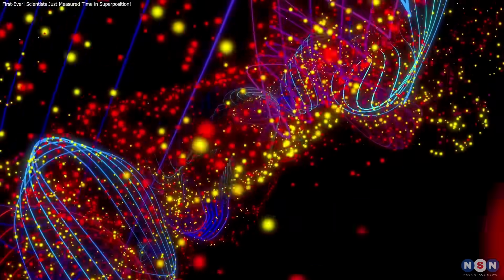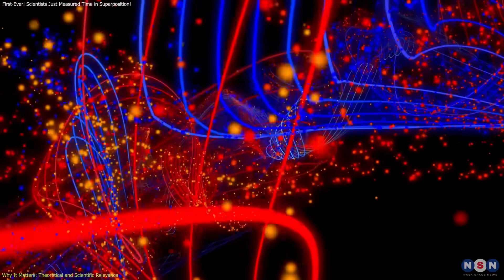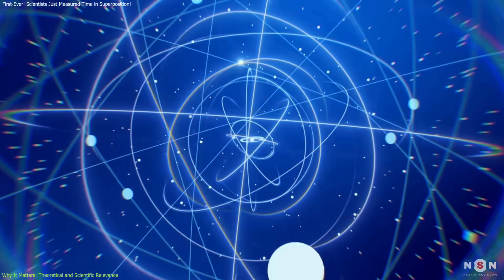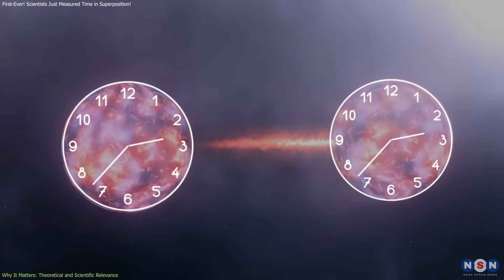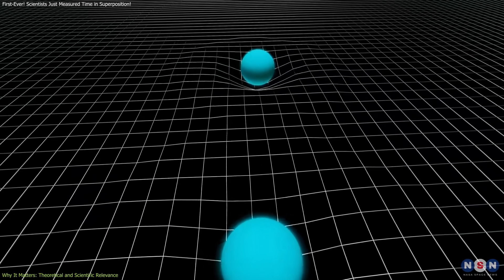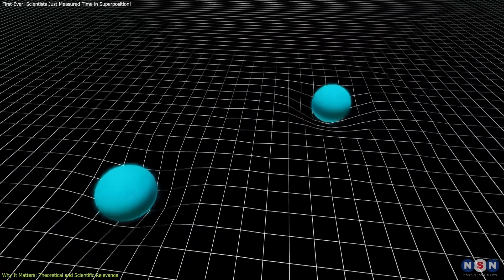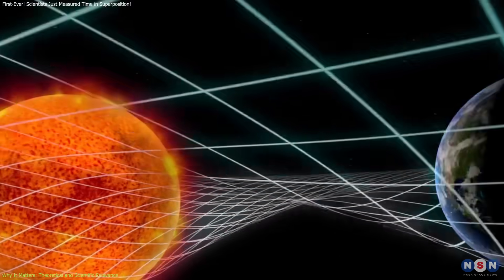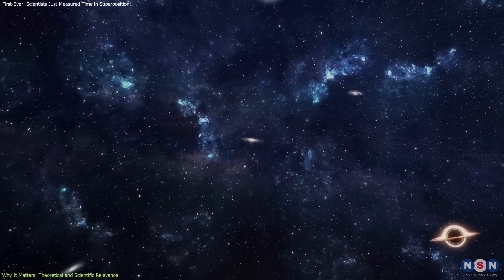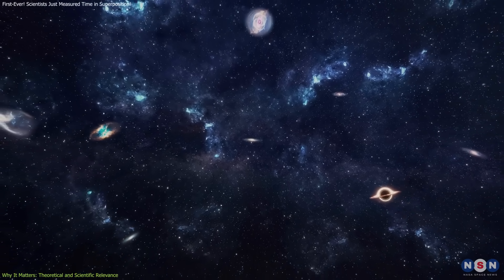On one side is quantum mechanics, which describes how particles behave at very small scales using probabilities, uncertainty, and superpositions. On the other hand, general relativity treats gravity not as a force, but as a manifestation of spacetime curvature, and it works beautifully for stars, galaxies, and black holes.